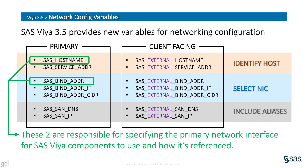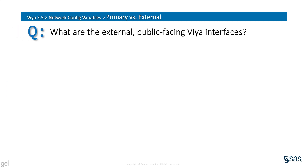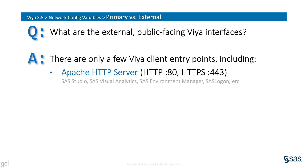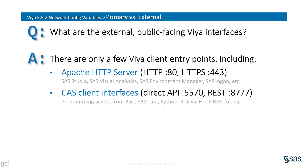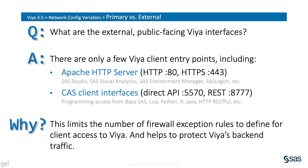We briefly mentioned the idea of an external network and client-facing services, but which Viya services are we talking about? As it turns out, not many. Much of the Viya infrastructure is tucked neatly behind a single point of contact — the Apache HTTP server — which acts as a reverse proxy. This means that a multitude of Viya services and web applications can all be accessed through a single route. CAS itself also offers its own client-facing APIs for direct programming access. This separation of client traffic from heavy-duty backend communication gives Viya flexibility to optimize for its topology and gives IT administrators confidence of clear traffic protection.